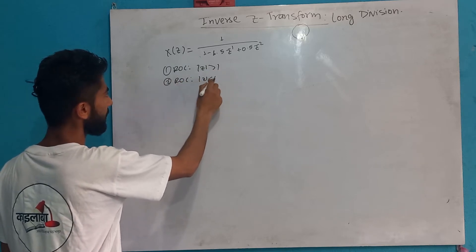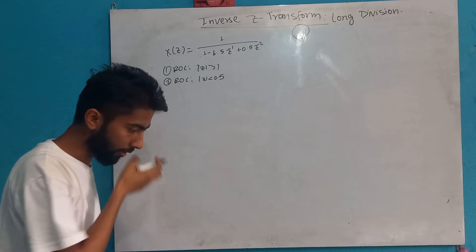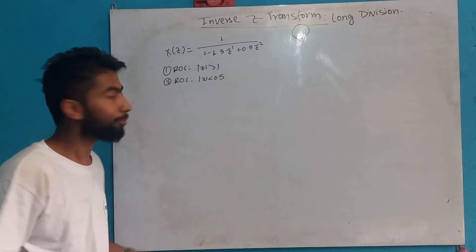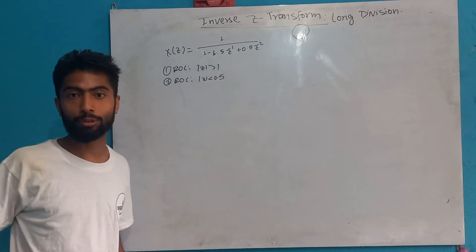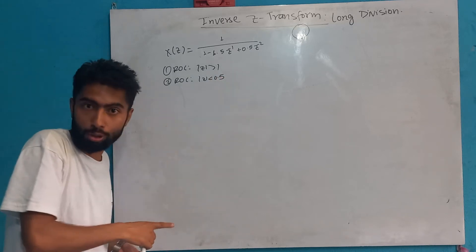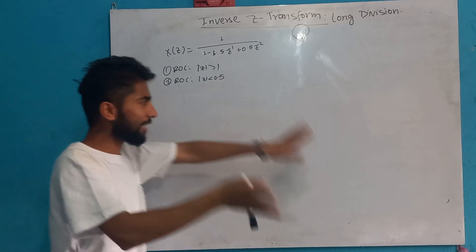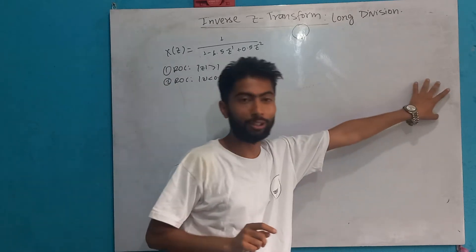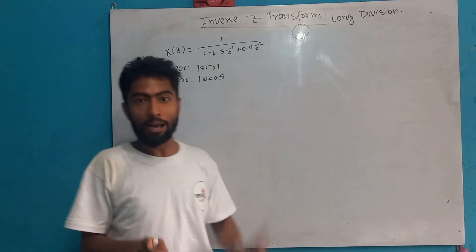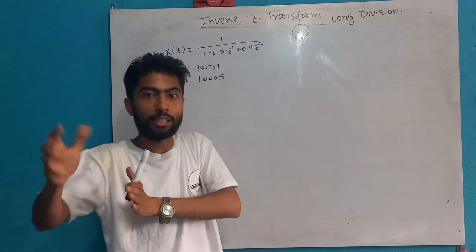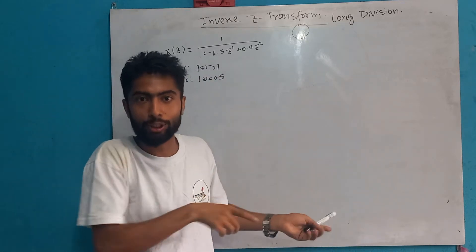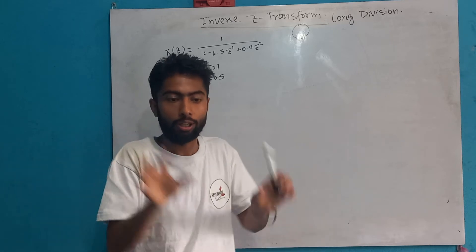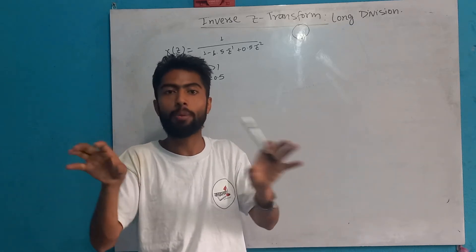So we are going to take a look at the ROC. The ROC is 0.5. We will take a look at the ROC — it has to be greater than, or the ROC is in between certain values.